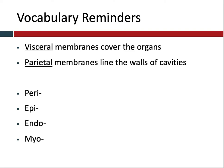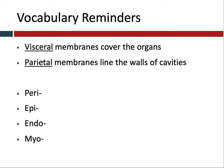Peri is a prefix that means around. Epi means above, on, over, near, or the outer part of something. Endo means within or the inner part of something. And myo is a prefix that we use for muscles.